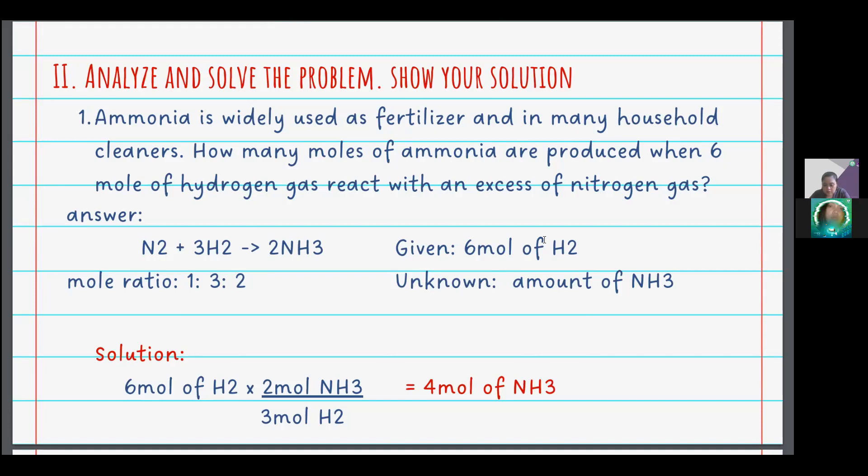Therefore, ammonia will produce 4 moles when 6 moles of hydrogen gas react with an excess of nitrogen gas.